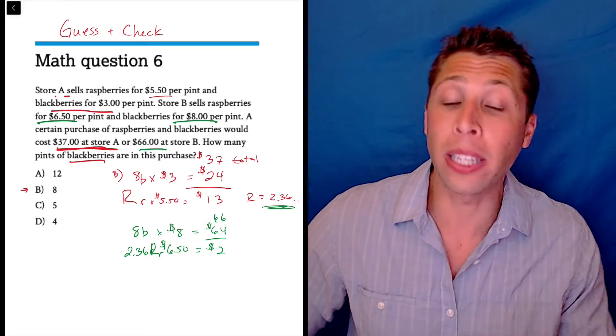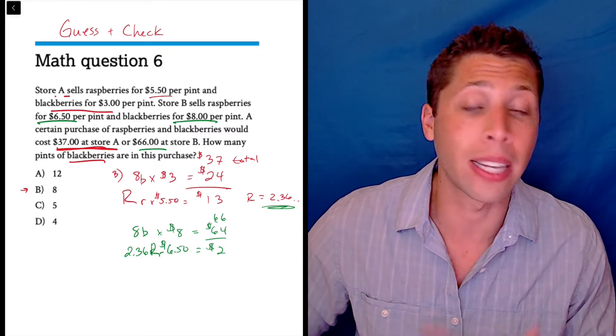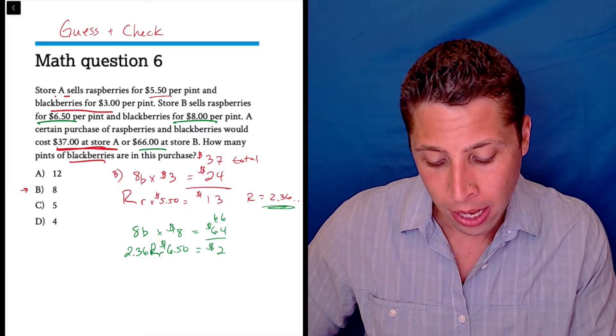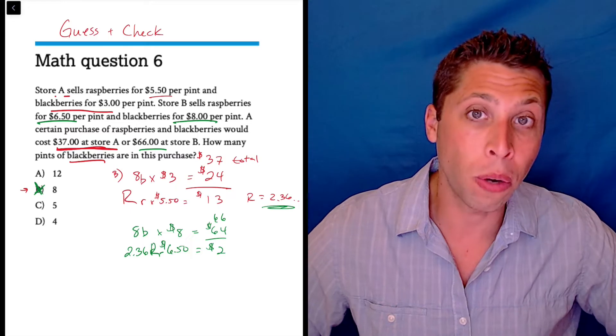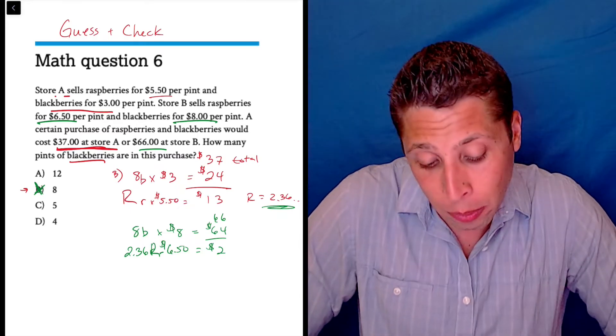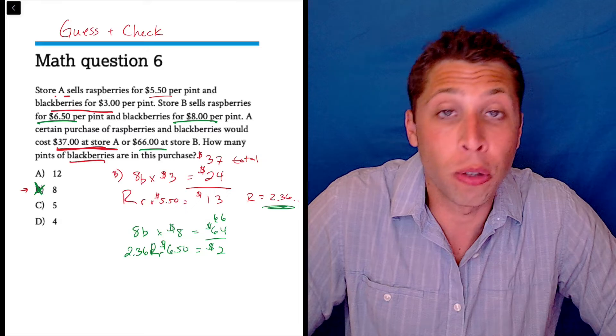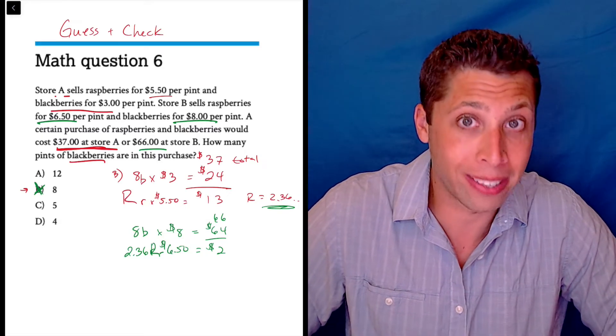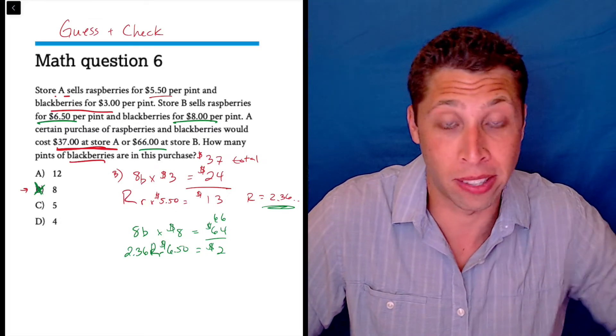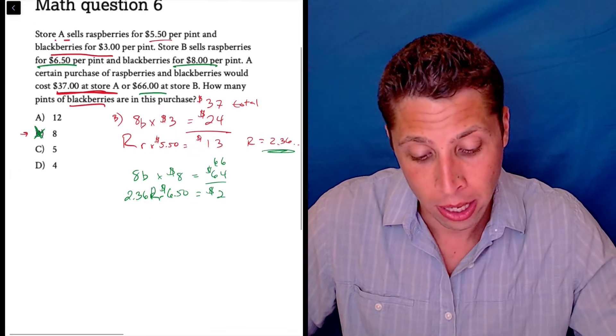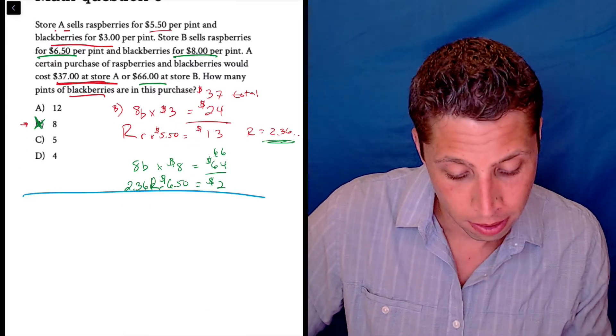This is confusing, even with the guess and check. But I think it lets us take one thing at a time and hopefully make more sense of it. So the numbers don't work out nicely for this one. So that would mean we need a new choice. Now, I think we have too many blackberries. Because the blackberries at store B are so freaking expensive, we've got to lower that price. So let's try choice C.